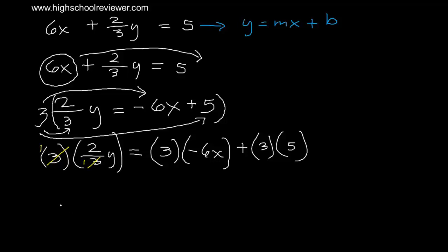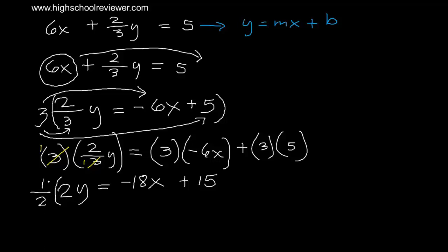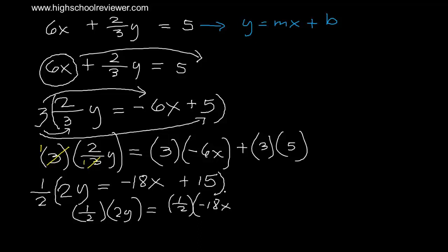So 2y equals 3 times negative 6x, which is negative 18x, plus 3 times 5, which is positive 15. We still have the coefficient 2 on y, so we need to divide both sides by 2. We multiply both sides by 1 over 2, enclosing the right side in parentheses. This gives 1 half times negative 18x plus 1 half times 15.